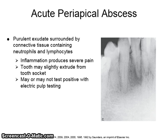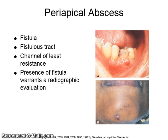The tooth may slightly extrude from the tooth socket. It may or may not test positive with electric pulp testing. The periapical abscess then forms a fistula or fistulous tract, which is the channel of least resistance. The presence of a fistula warrants a radiographic evaluation. The fistula's tract allows the purulent exudate to escape.